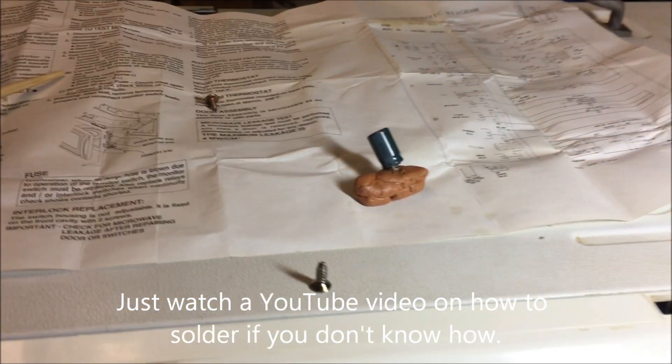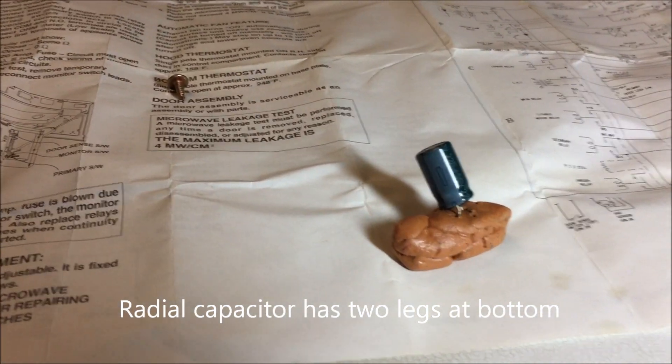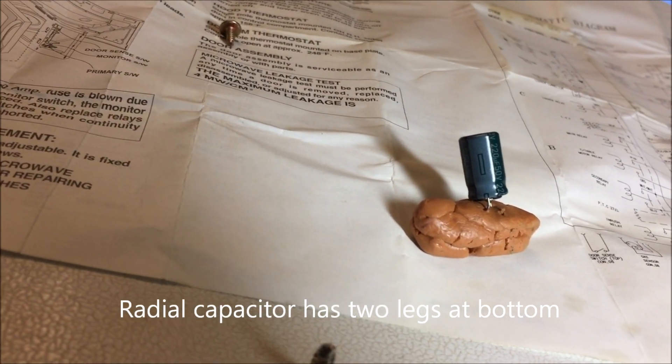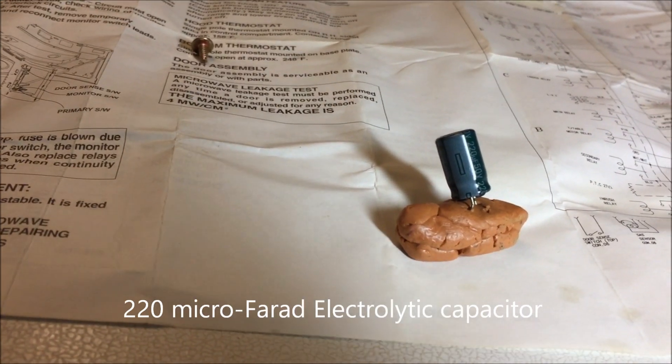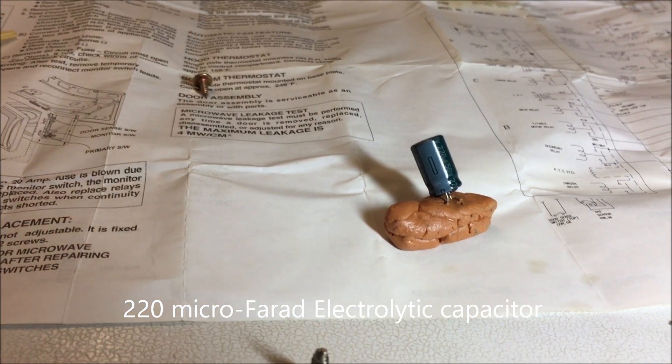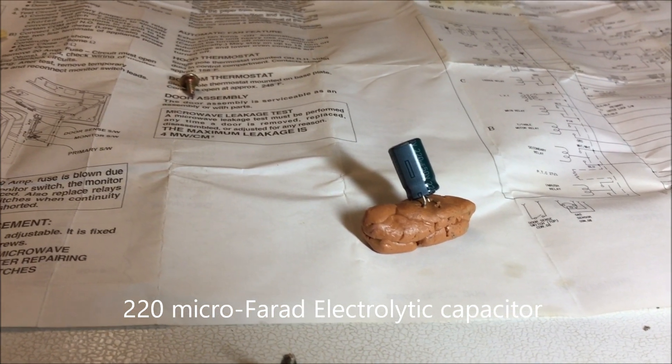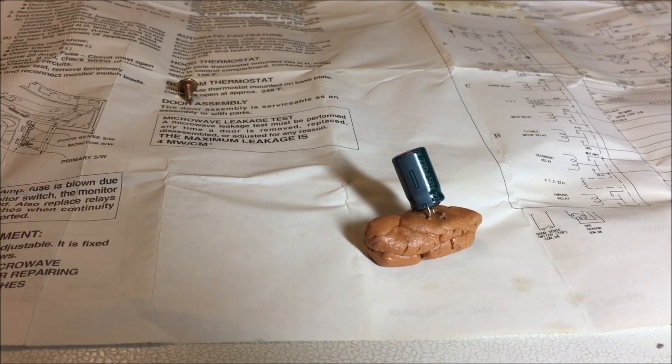Here's the capacitor sitting up on some modeling clay. Look at that nice label. However, this has a slight bulge to it. The only reason I knew to replace it is because the 220 microfarad capacitor is used to control these relays that are buzzing.